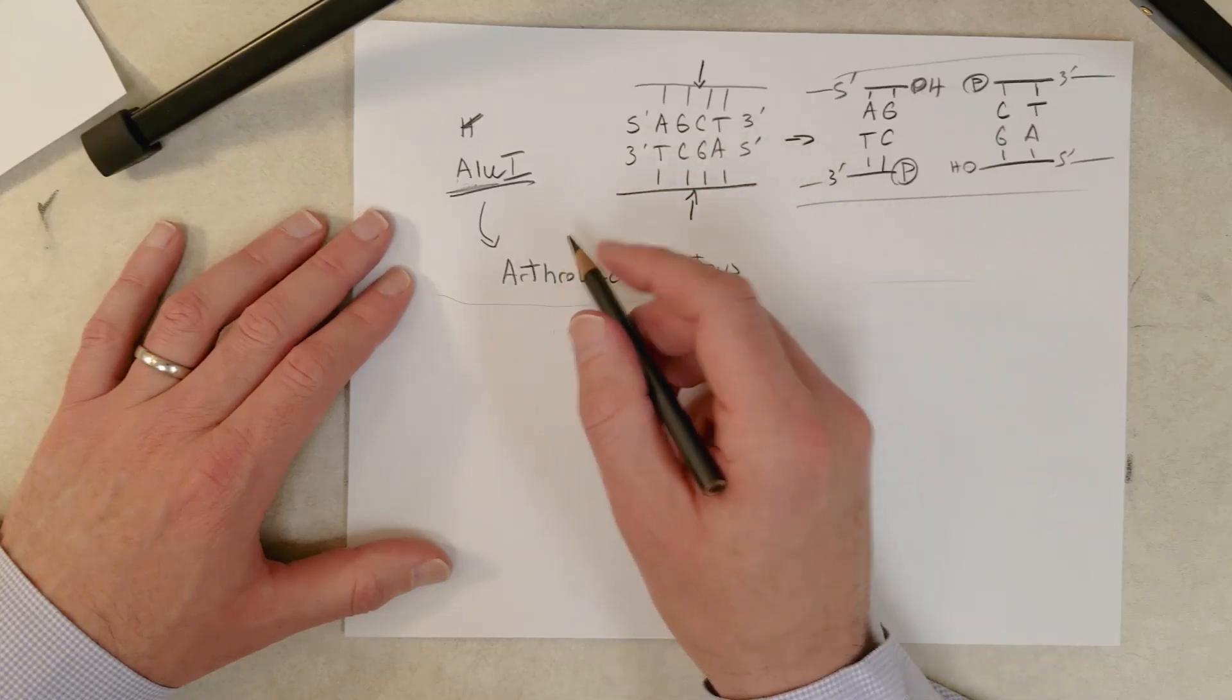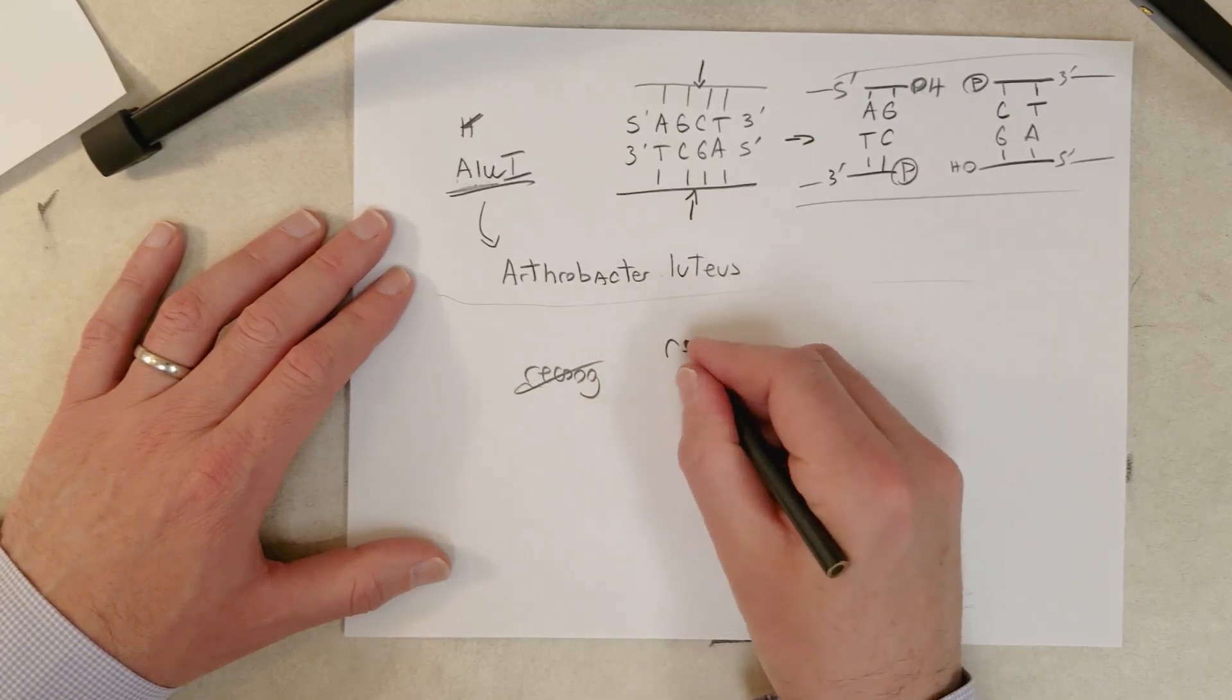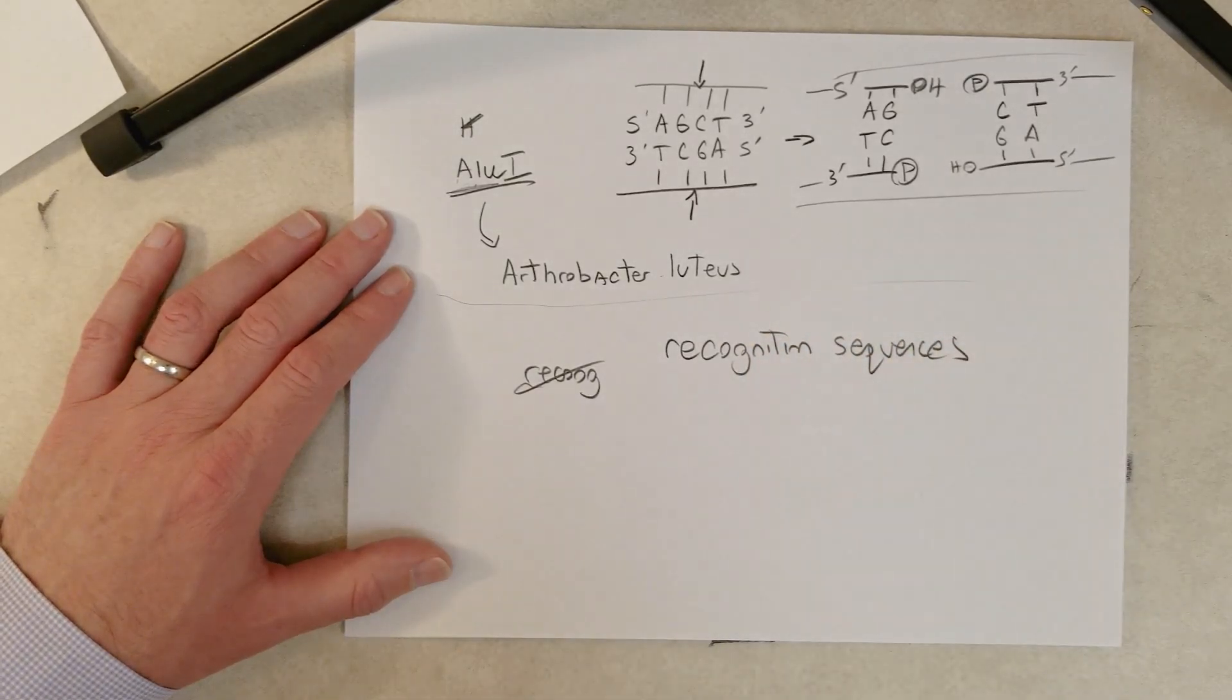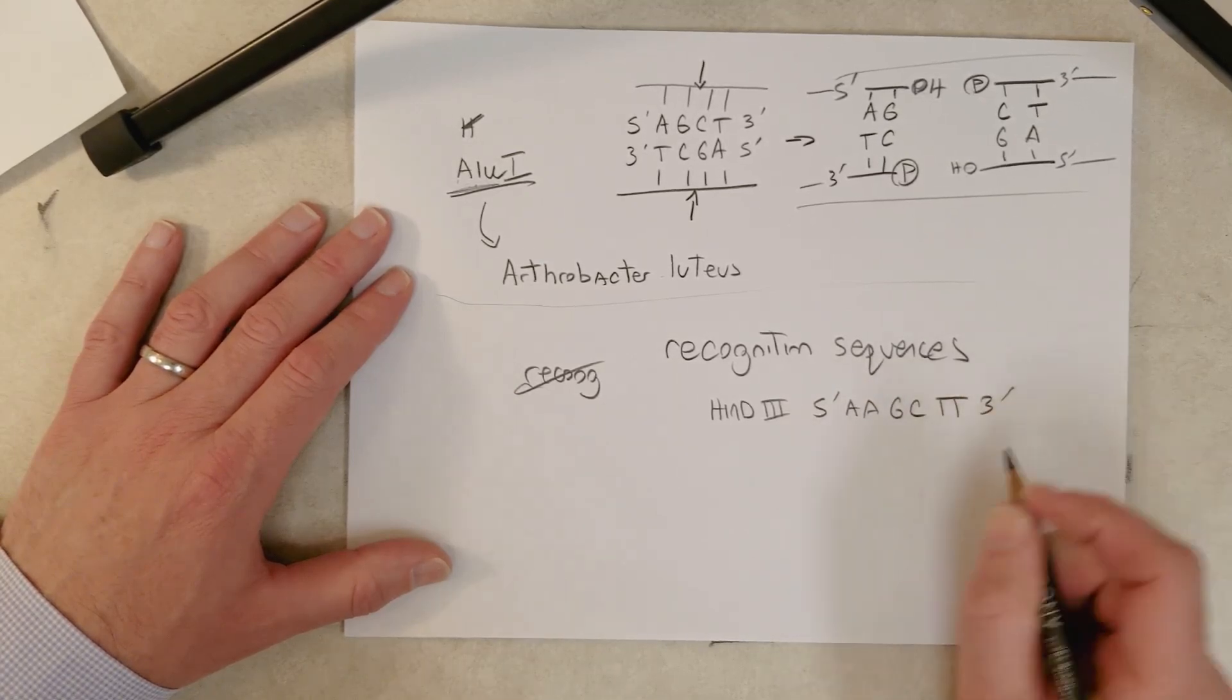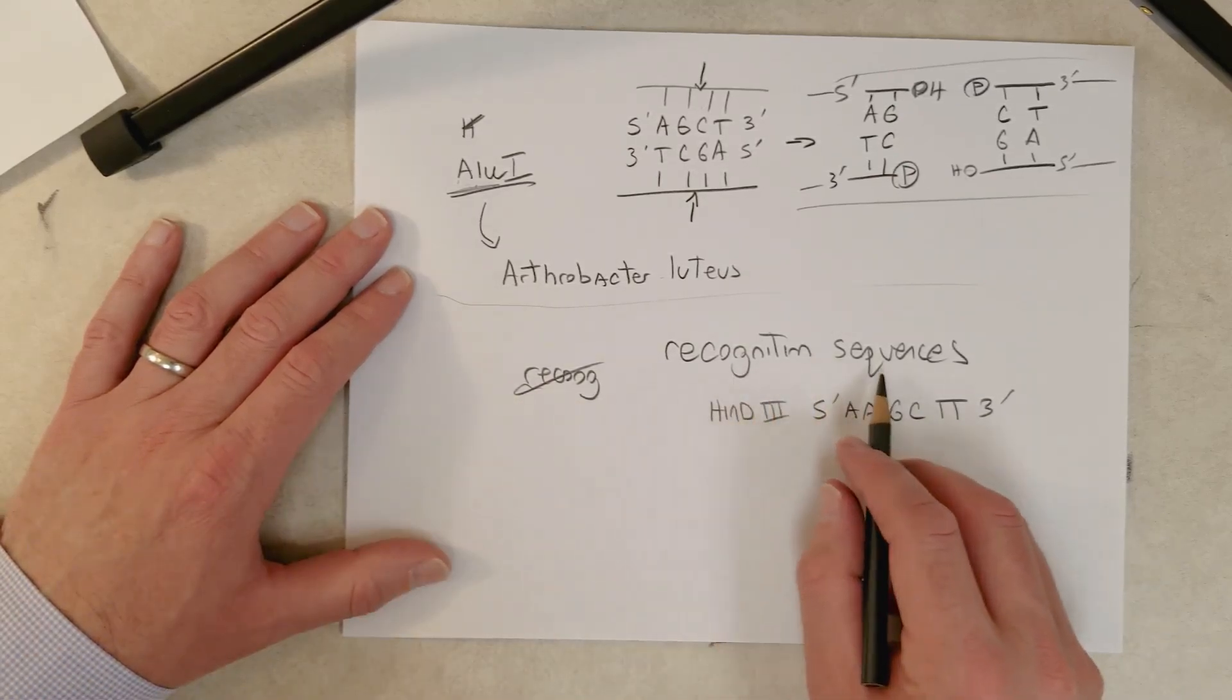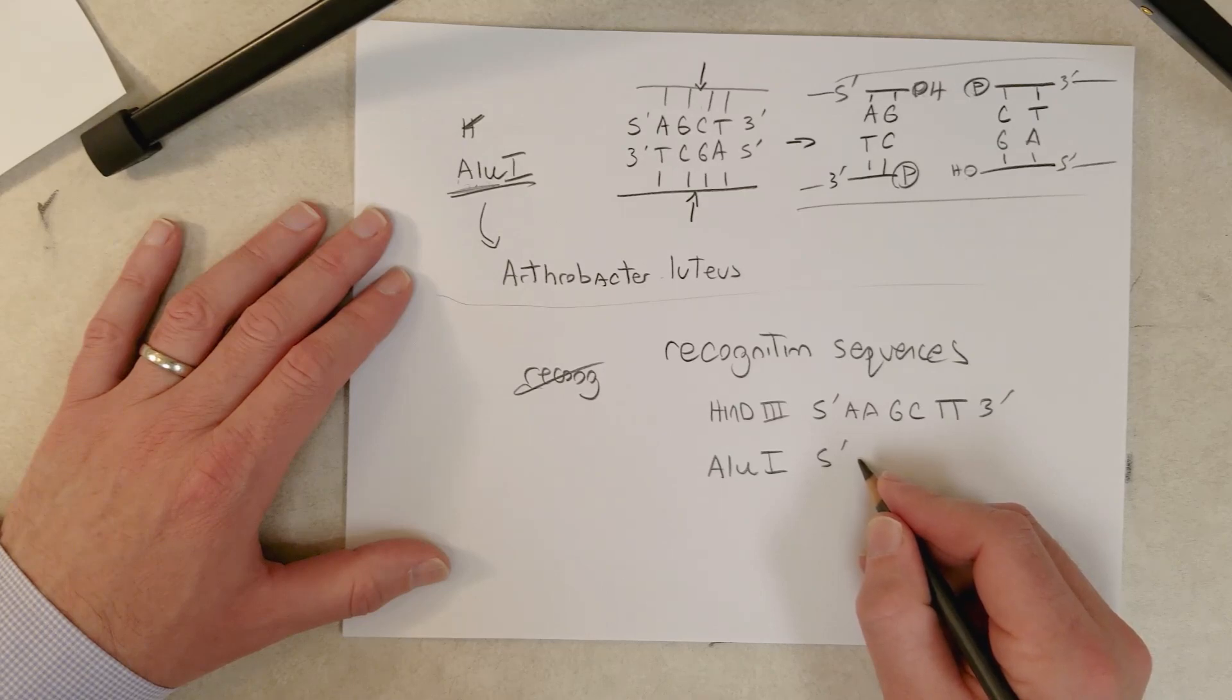Okay, so one of two things we saw so far, we saw two different recognition sequences. Recognition sequences are the sequences that are recognized by restriction endonucleases. HindIII recognizes the sequence AAGCTT, I won't put the complementary strand in here. So it recognizes a six base pair recognition sequence, and AluI recognizes a four base pair recognition sequence, and it was AGCT.